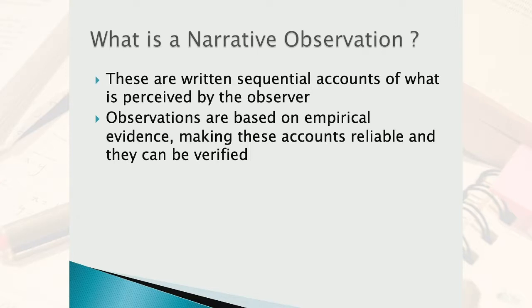The term narrative observation basically refers to a written document that tells the story. It includes a sequence of events that are happening in the environment or with a specific child, telling the story about the child or within that program. It gives you information on what is happening — whether it's a behavioral type of documentation — including what happens before the actual event and after, to best help you meet the needs of children within your program.